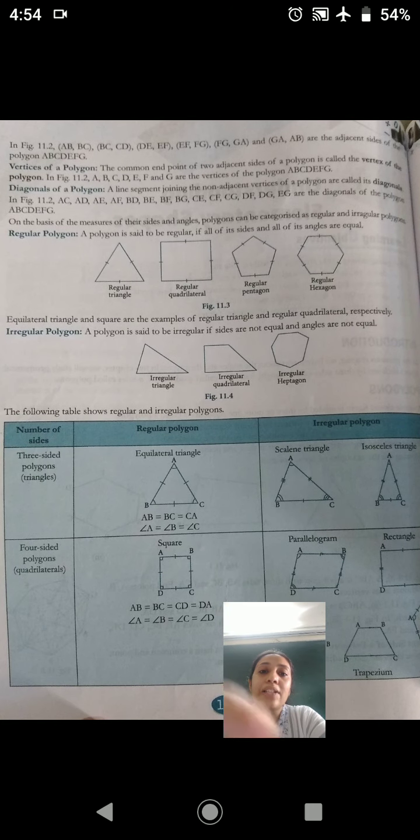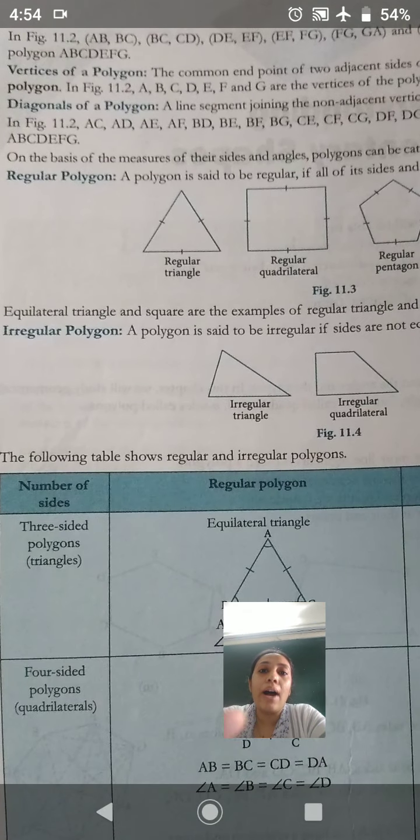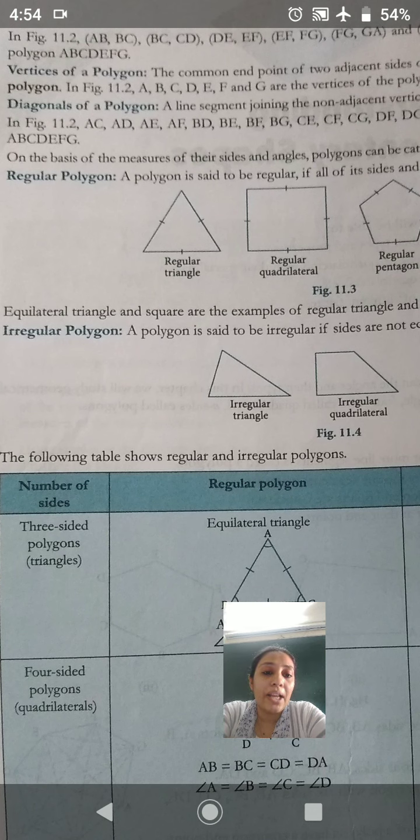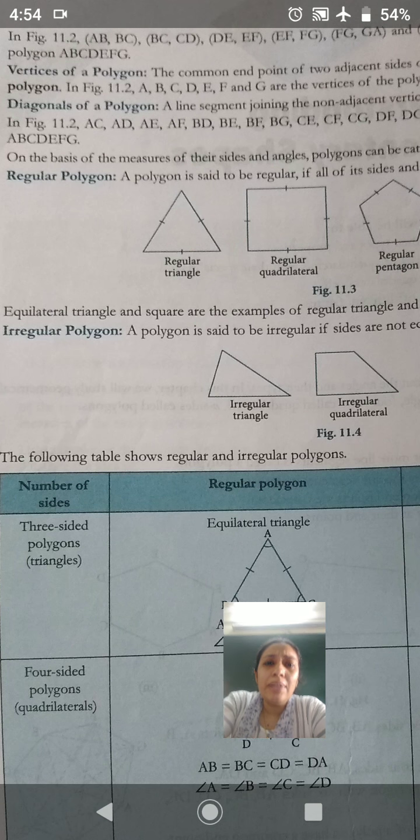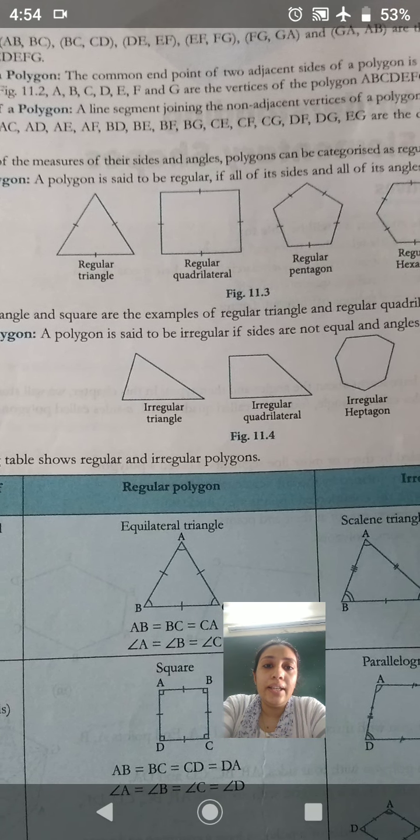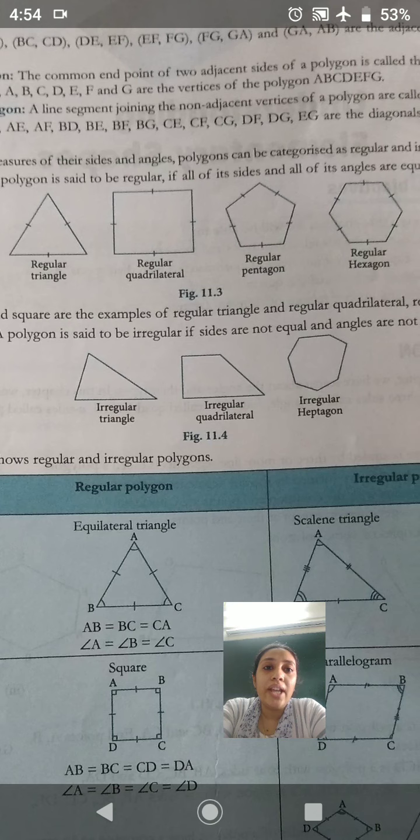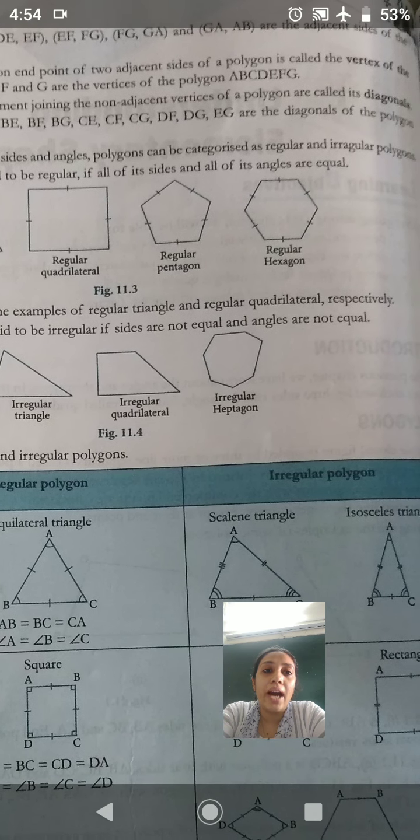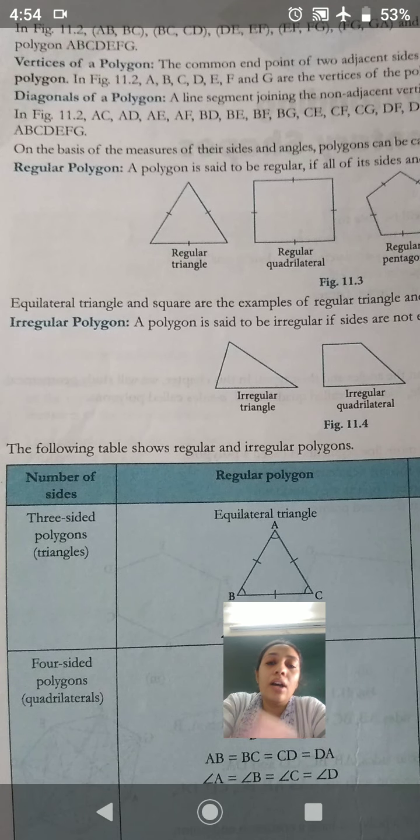Then the sides are called the adjacent sides of a polygon. If you find any common end point, that would be called common or the adjacent sides of a polygon. If you turn to the next page, there it's written in figure 11.2, the first figure we saw. AB, BC, CD, DE, EF, FG, GA are the adjacent sides of the polygon ABCDEFG.